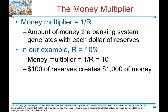The money multiplier. The formula for calculating the money multiplier is 1 over the reserve ratio — the amount of money the banking system generates with each dollar of reserves. In our example, the reserve ratio is 10%, so the money multiplier is 1 over 0.1, which equals 10. Therefore, $100 of reserves creates $1,000 — that is $100 times 10.